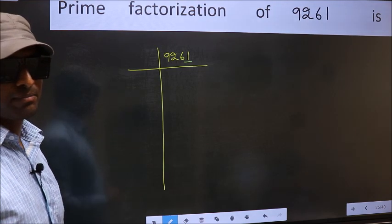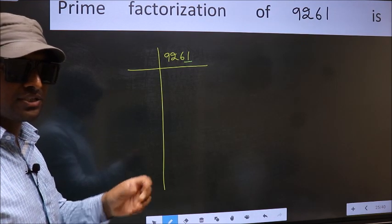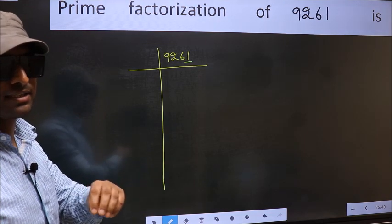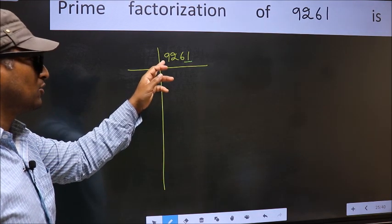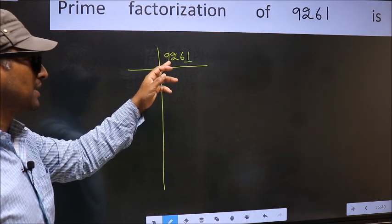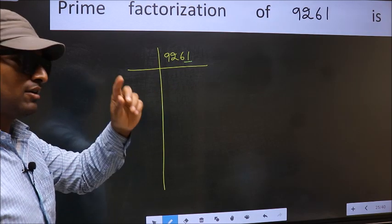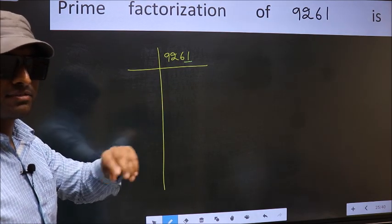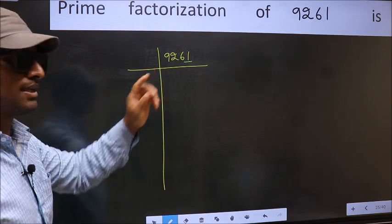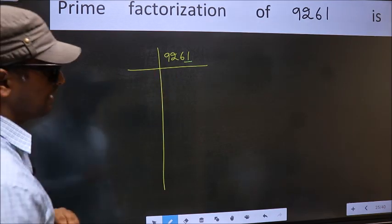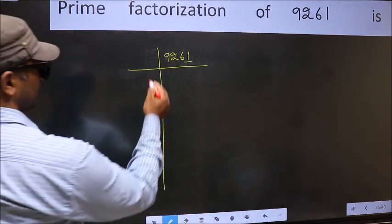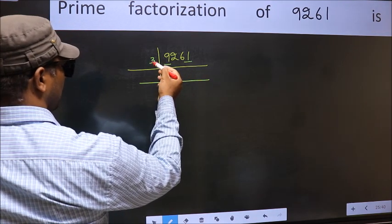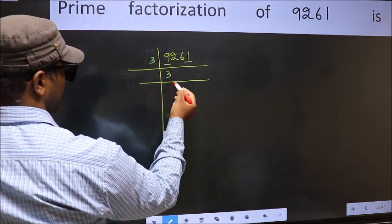To check divisibility by 3, we should add the digits. That is 9 plus 2 plus 6 plus 1, which gives 18. Since 18 is divisible by 3, this number is also divisible by 3. So take 3. First number is 9 — when do we get 9 in the 3 times table? 3 times 3 is 9.